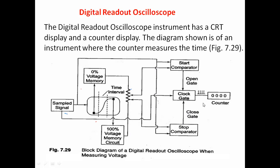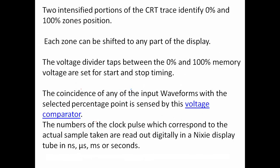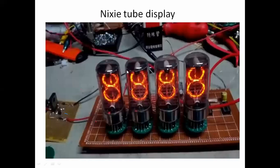Here we use a Nixie display. The number of clock pulses corresponding to the actual samples taken is read out digitally in the Nixie tube display in nanoseconds, microseconds, milliseconds, and seconds. In place of using a Nixie tube, we can also use a 7-segment display.